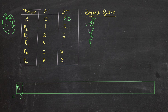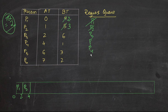Next we execute P2. P2 will be executed for 2 seconds, so from 2 to 4, and the remaining time will be 3. Within 4 seconds, we have P4 arriving in the CPU, so we queue P4. And since P2 is not completed fully, we queue P2 again.